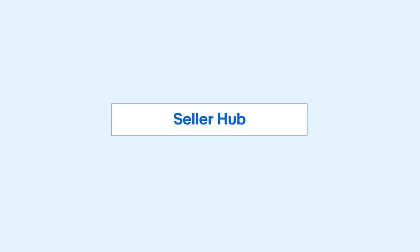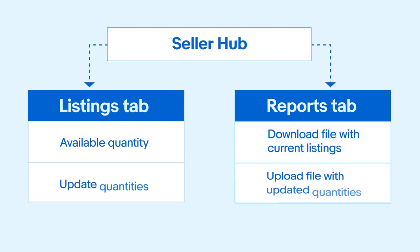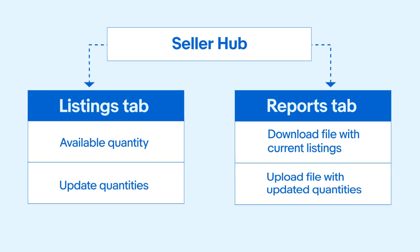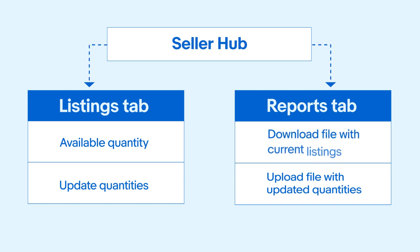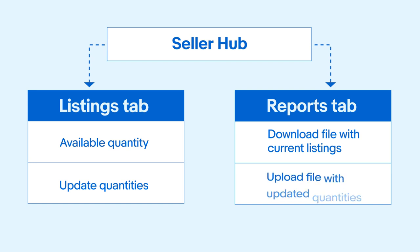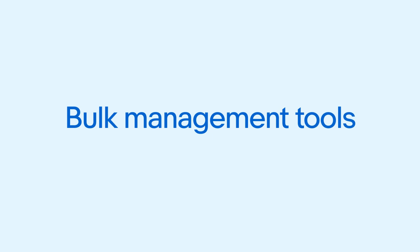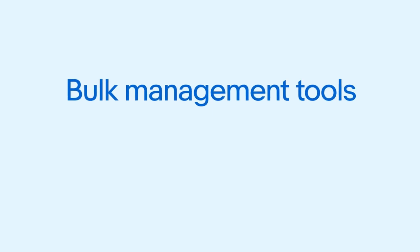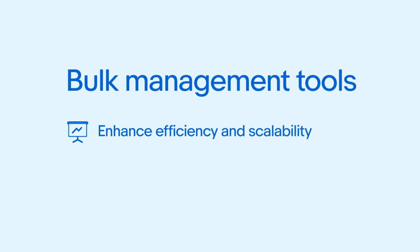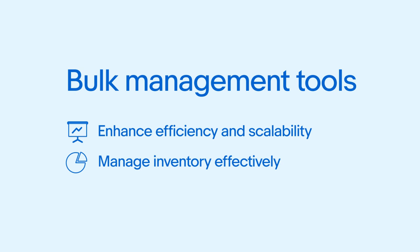Next, make use of SellerHub to efficiently manage your inventory. You can sort listings by available quantity on the listings tab and easily update quantities for one or more listings. Alternatively, you can download a file from the Reports tab with your current listings and upload a file with updated quantities. For high-volume sellers, consider utilising bulk management tools, which can greatly enhance your efficiency and scalability, making it easier to manage your inventory effectively.